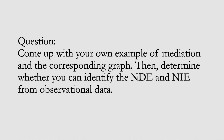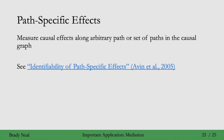The final question is to come up with your own example of mediation and the corresponding causal graph, then see whether you can identify the natural direct effect and natural indirect effect from observational or experimental data using the sufficient conditions on the last slide. You might also be interested in measuring causal effects flowing along arbitrary paths in the graph — these are known as path-specific effects. If you want to learn more, check out the 'Identifiability of Path-Specific Effects' paper from 2005. And that's the end of this course on Introduction to Causal Inference. Thanks for sticking through to the end.